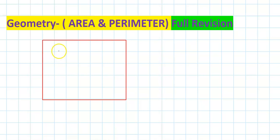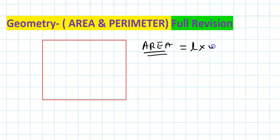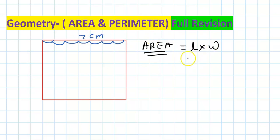So what is area of a rectangle? Area of rectangle is length times width. This is 1 centimeter by 1 centimeter block. Counting along the length: 1, 2, 3, 4, 5, 6, and 7. So this is 7 centimeters, which is the length.